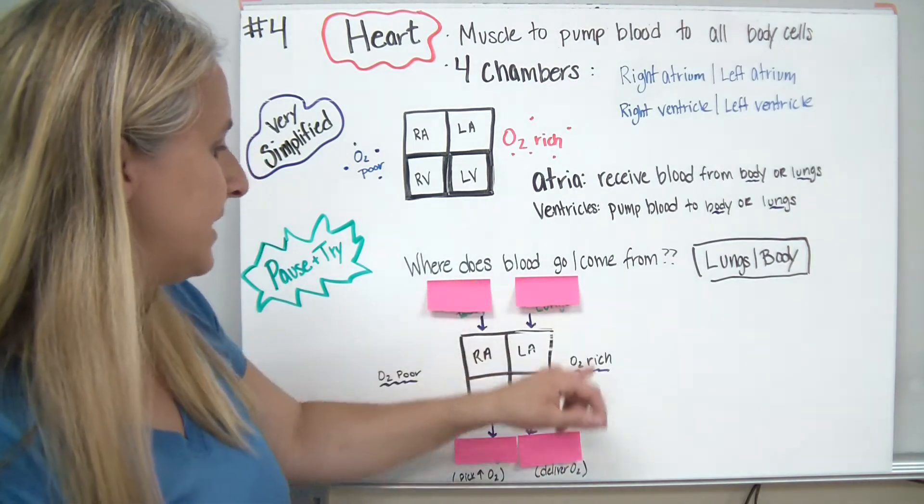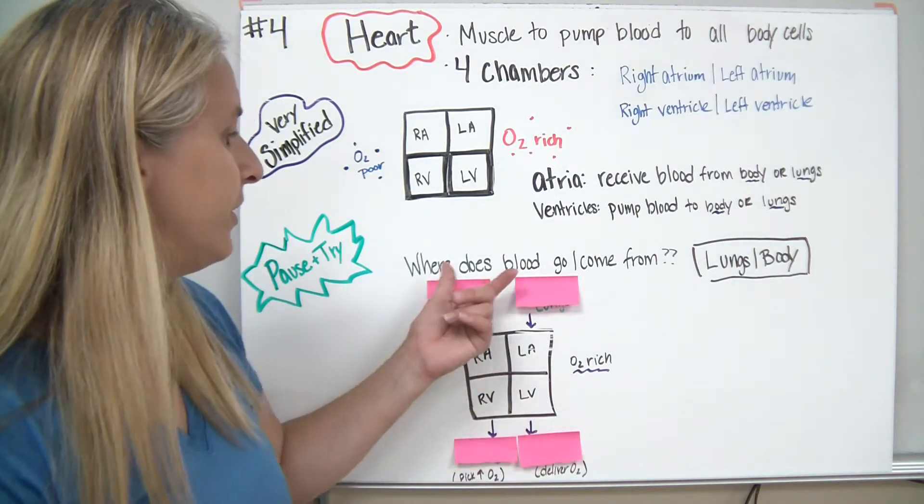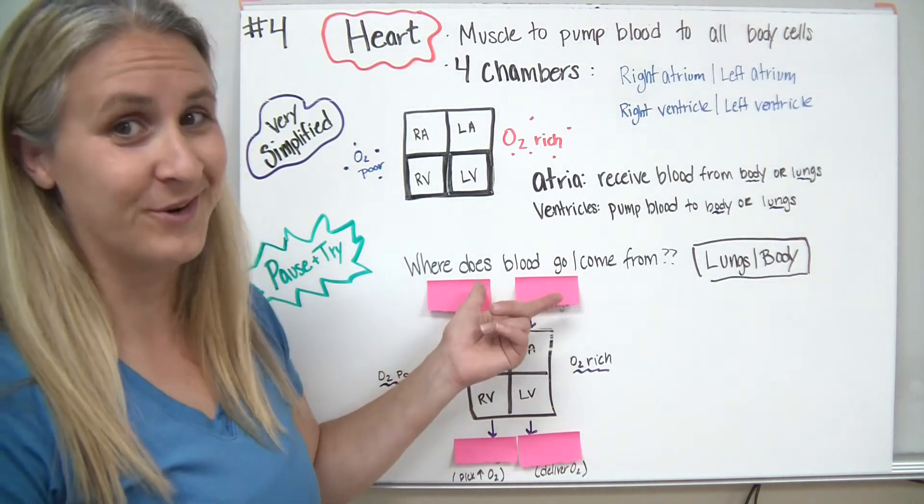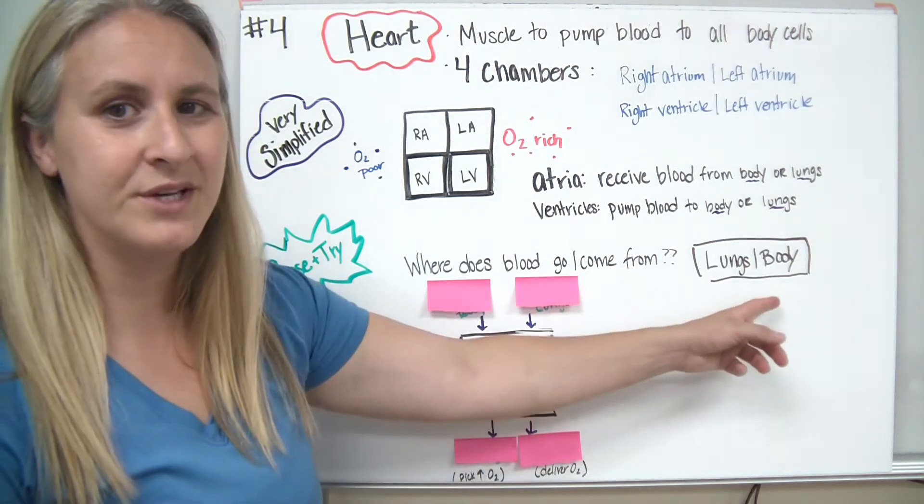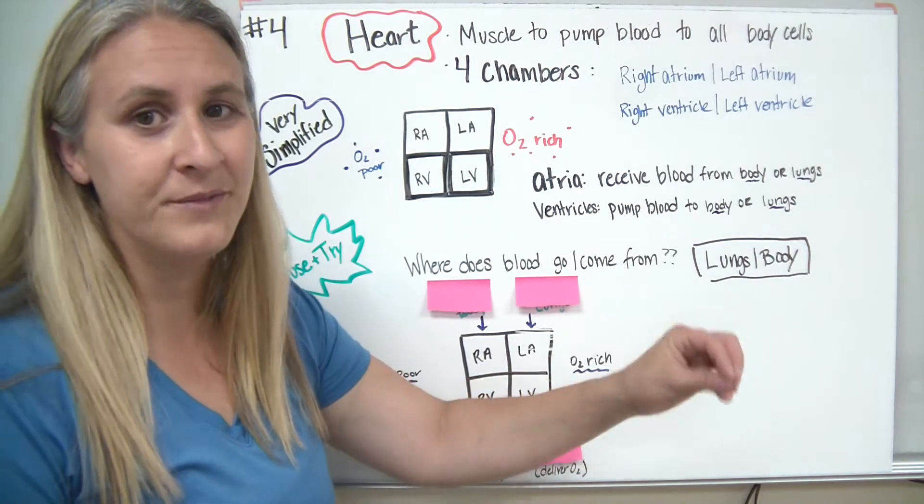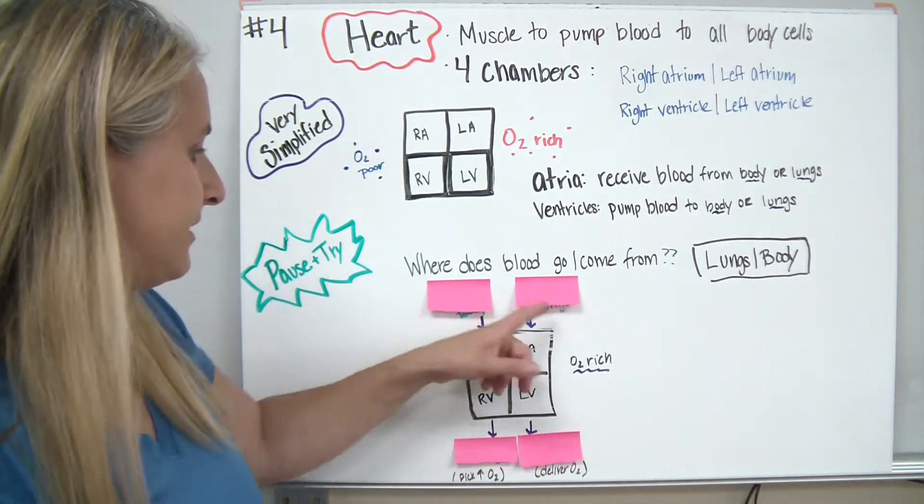So what I'd like you to do is I'd like you to label this diagram down here, and I'd like you to try to label where does the blood go, and where does it come from? Where does it come from, where does it go? So I want you to label from the lungs to the lungs, from the body to the body on this diagram.